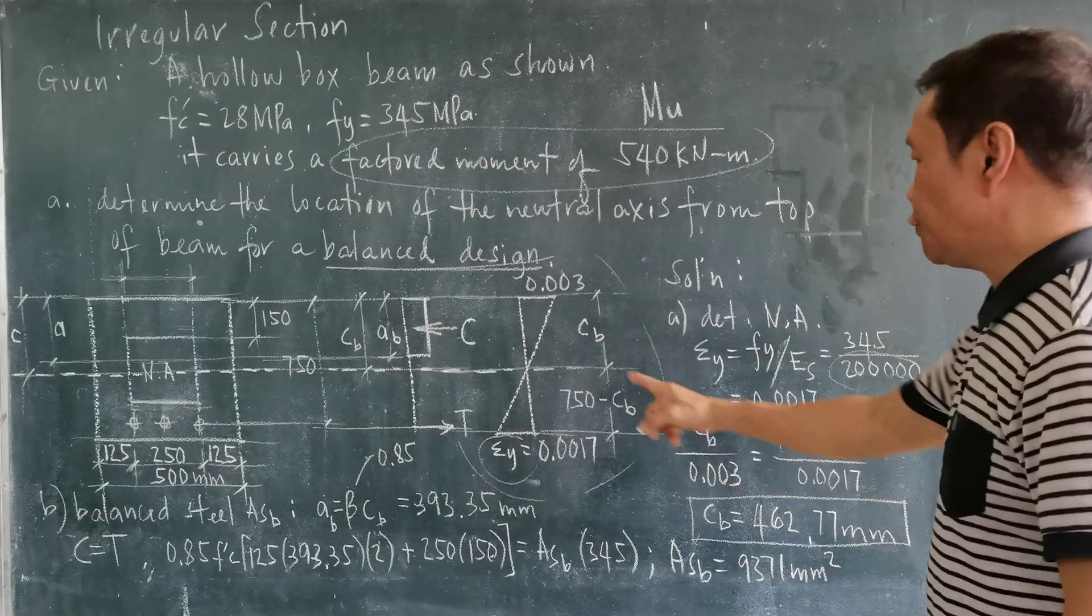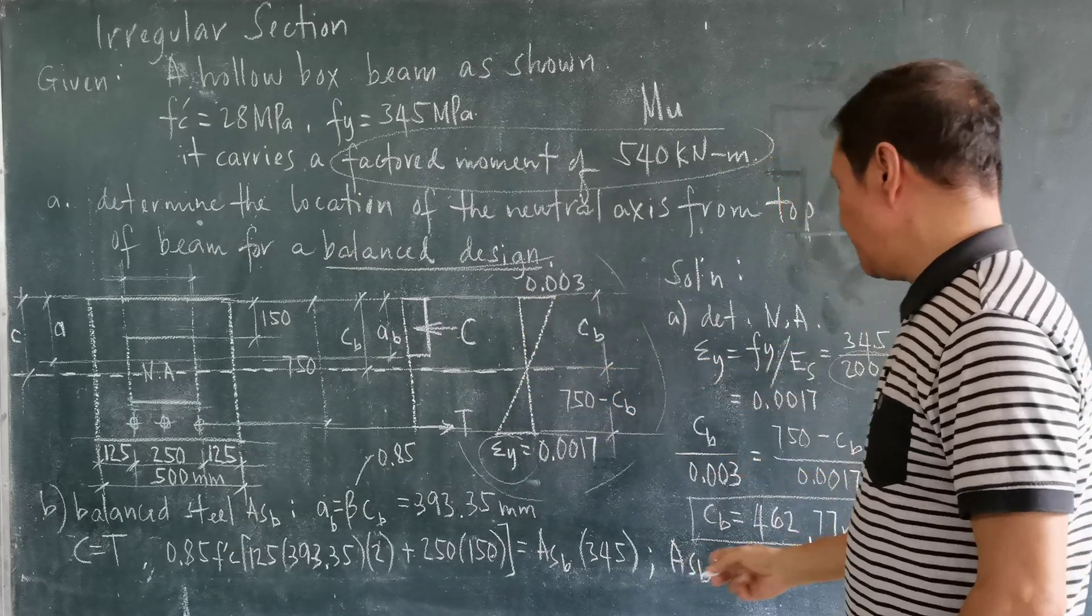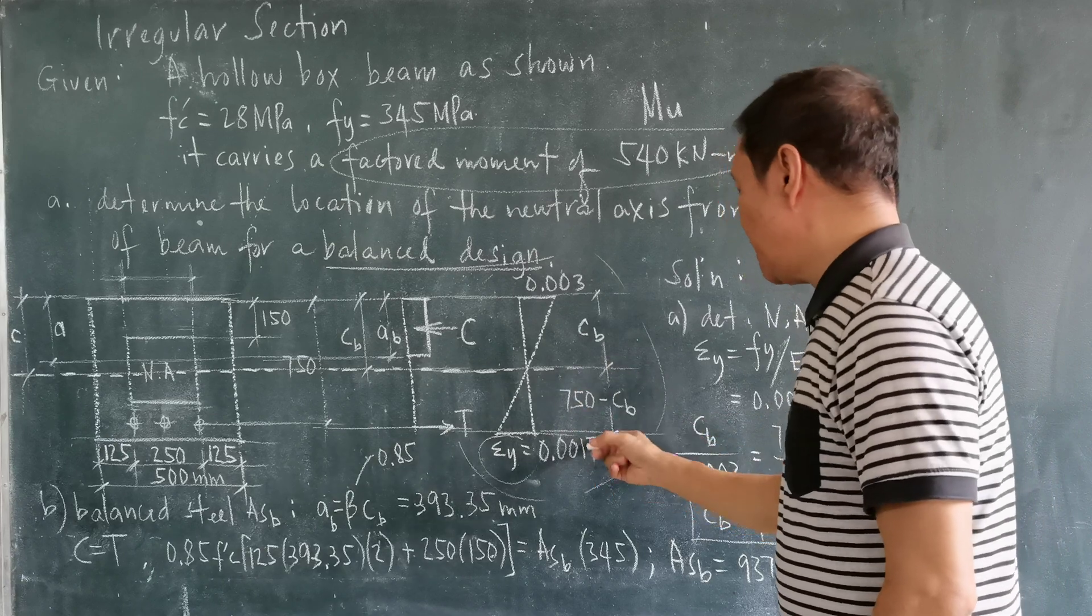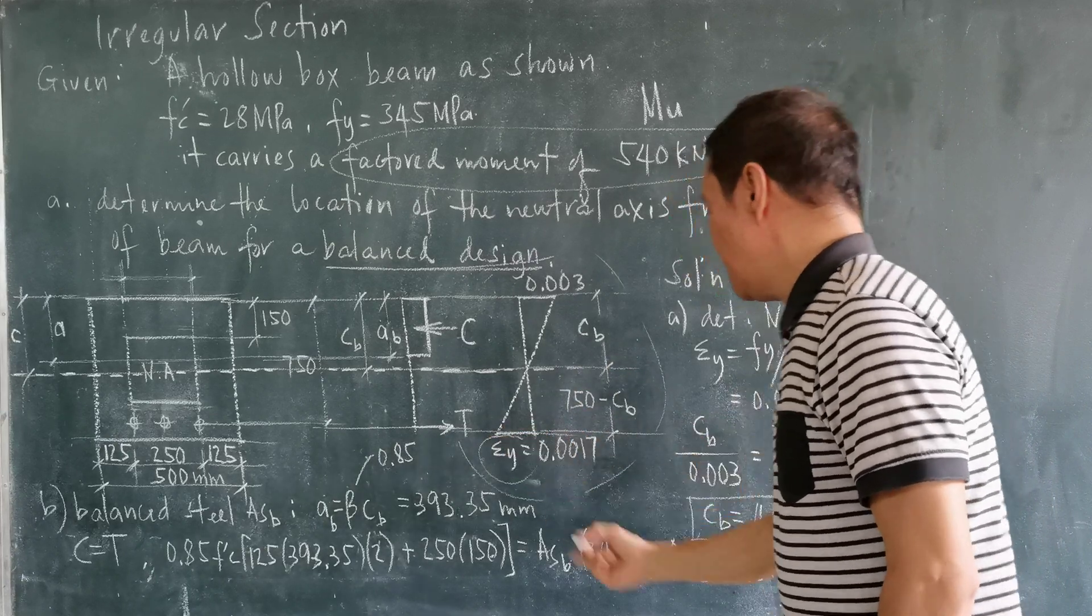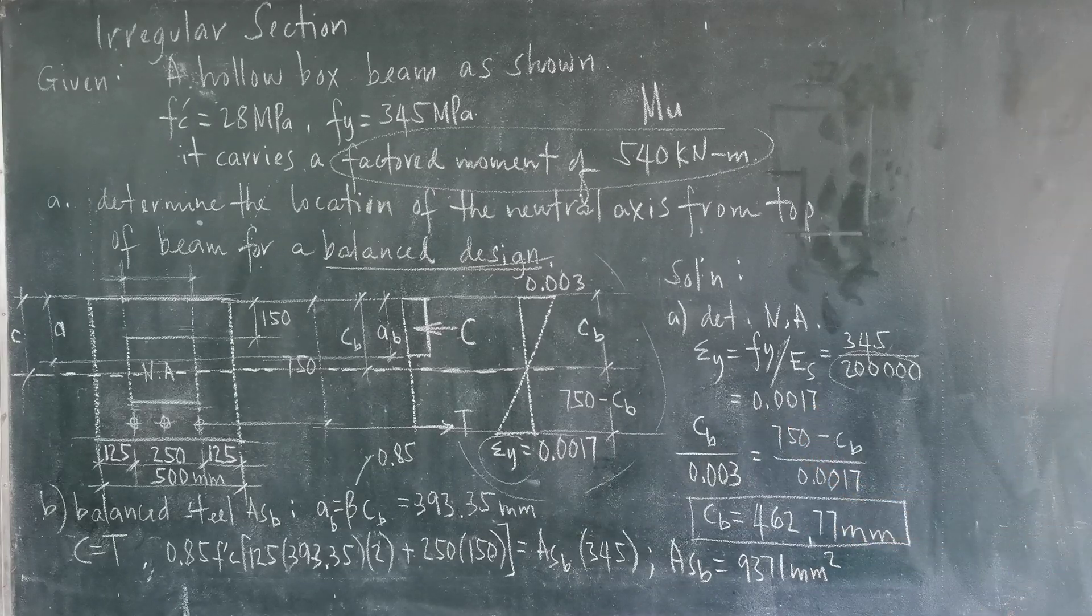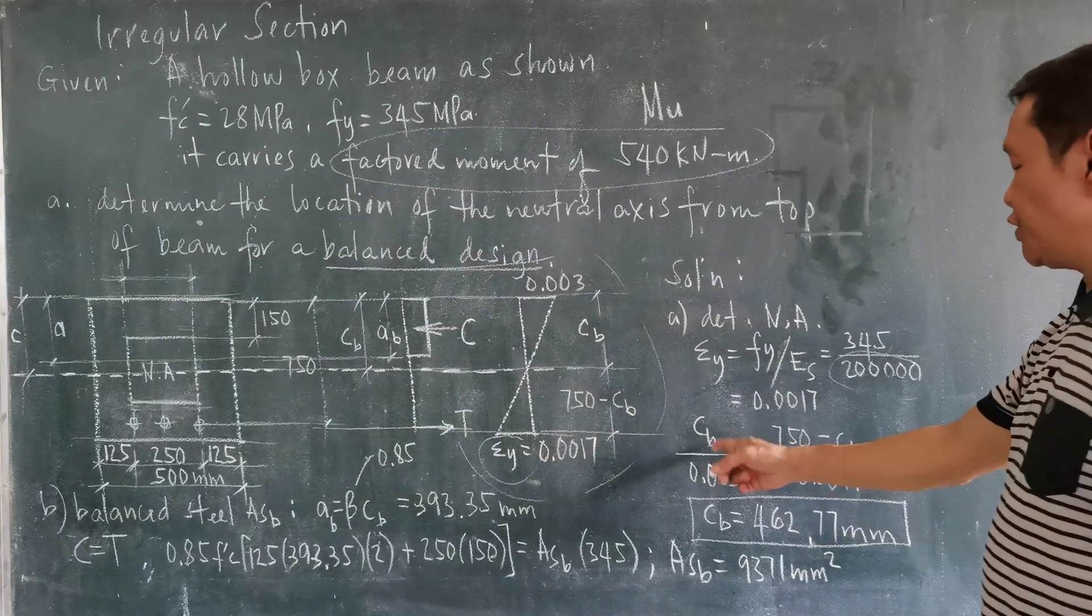So C sub B is to 0.003 as 750 minus C sub B is to the strain sub y, which is 0.0017.